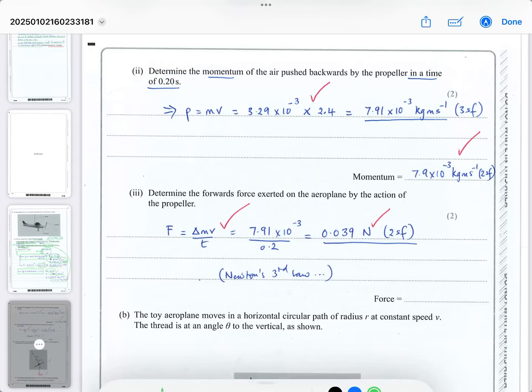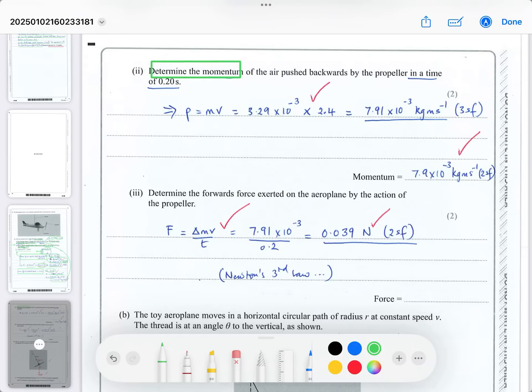Next, they want you to determine the momentum. We know the mass and velocity from before. To calculate momentum, use the mass pushed out in 0.20 seconds multiplied by the velocity of 2.4 m/s. This gives the momentum change, rounded to two significant figures for the final answer